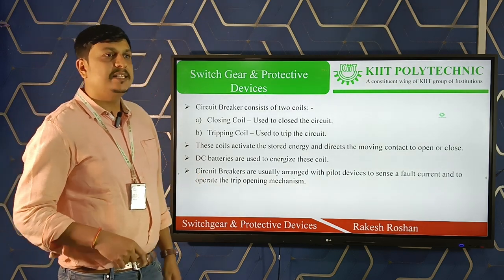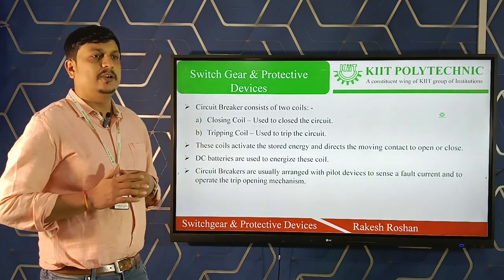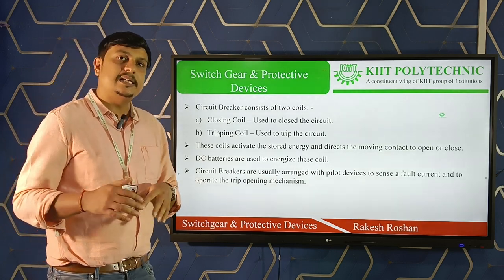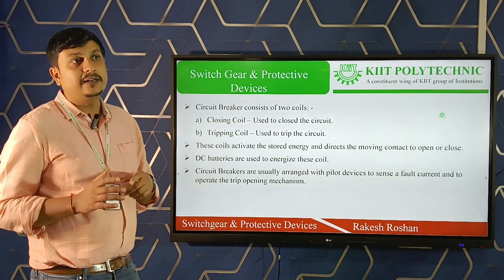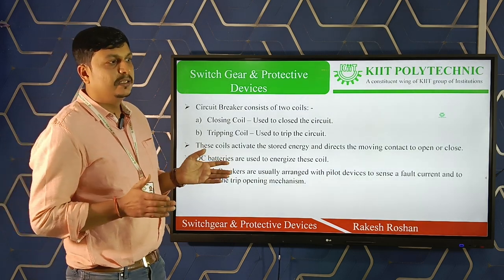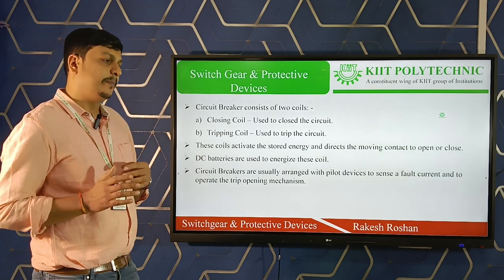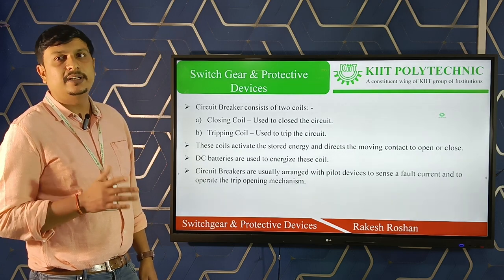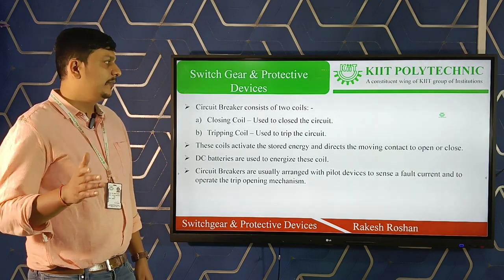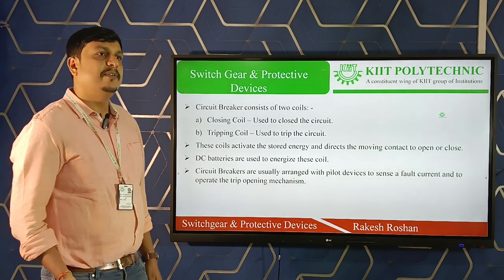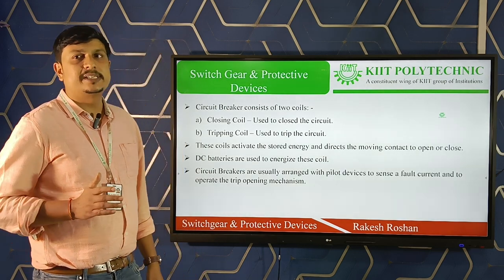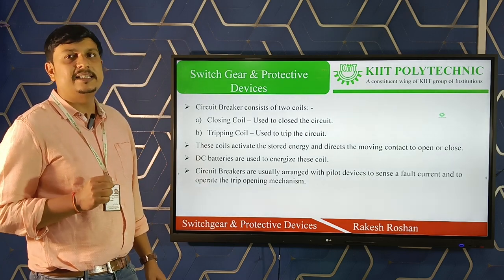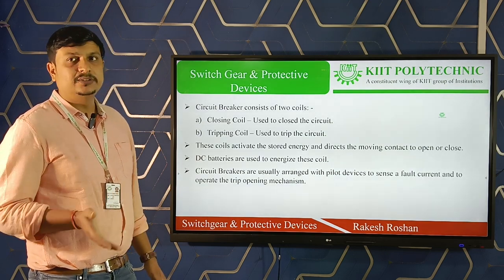A circuit breaker is an automatic device, but for its automatic function an auxiliary device is needed — that device is a relay. A relay acts as a sensing unit (a black box) that senses the fault and instructs the circuit breaker to isolate the faulty section from the healthy section. Whenever a fault occurs, a large current flows in the system; the relay senses that large current and instructs the circuit breaker to operate.